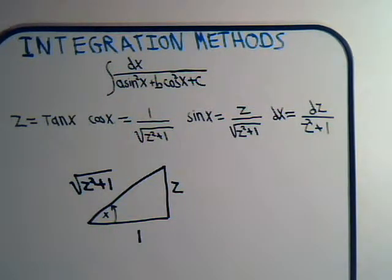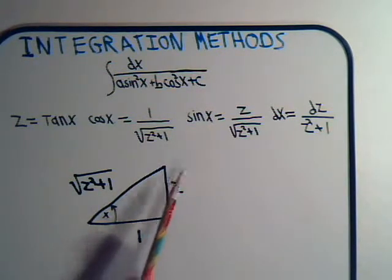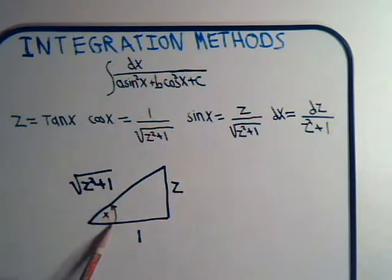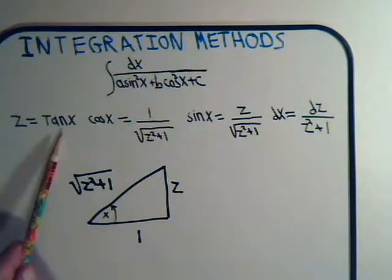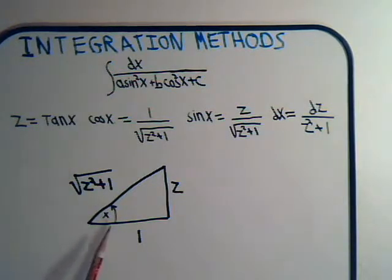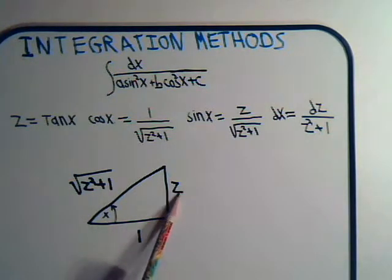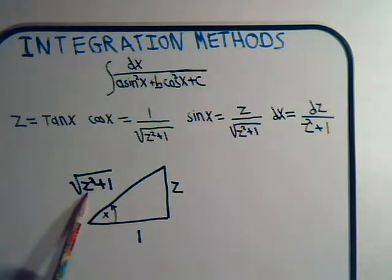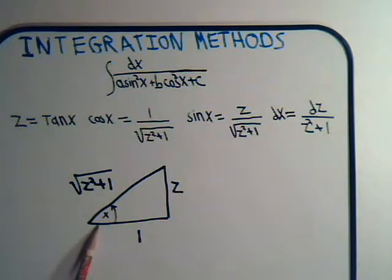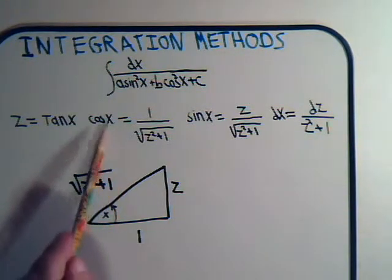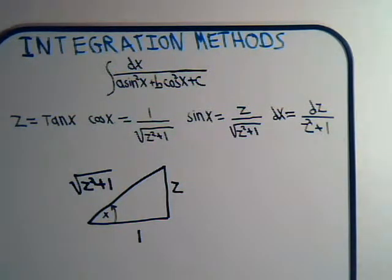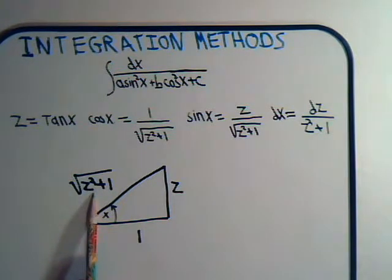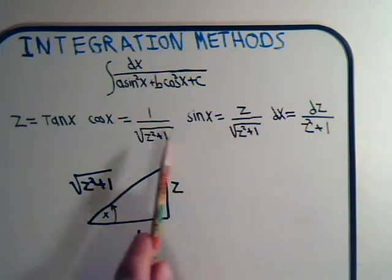We draw a triangle like we've done many times before — here's the angle x. In terms of the new variable, the tangent of x equals z divided by 1: side opposite z divided by side adjacent 1. So the hypotenuse is √(z² + 1). The cosine of x is the side adjacent divided by the hypotenuse, and the sine of x is the side opposite divided by the hypotenuse — both now expressed in terms of z.